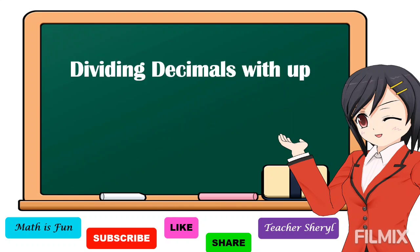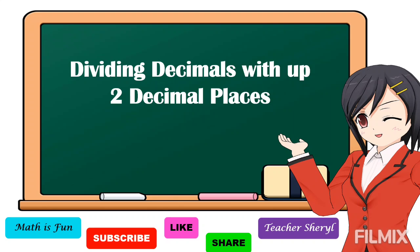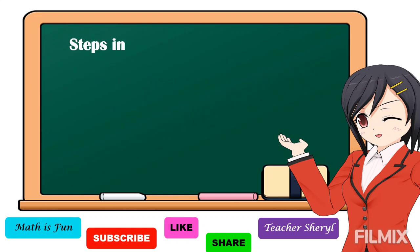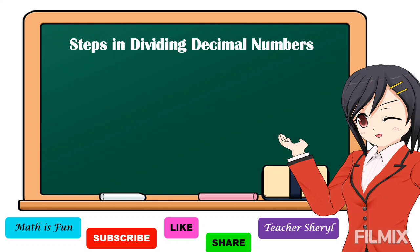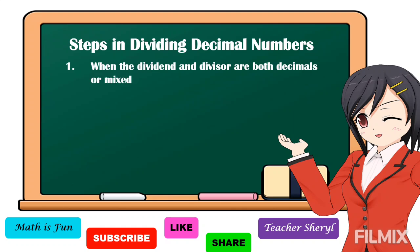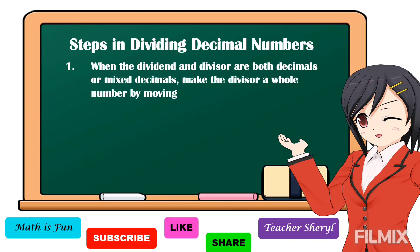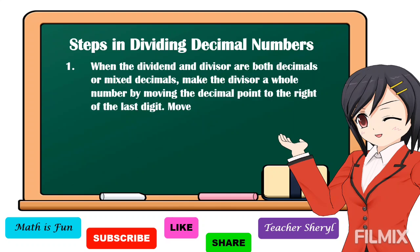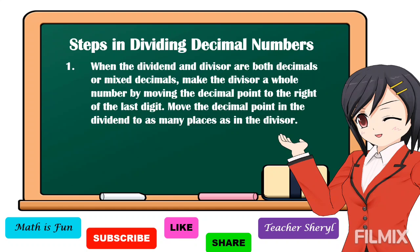Our lesson for today is all about dividing decimals with up to two decimal places. Here are the steps in dividing decimal numbers. Number one: when the dividend and divisor are pure decimals or mixed decimals, make the divisor a whole number by moving the decimal point to the right of the last digit. Move the decimal point in the dividend as many places as in the divisor.